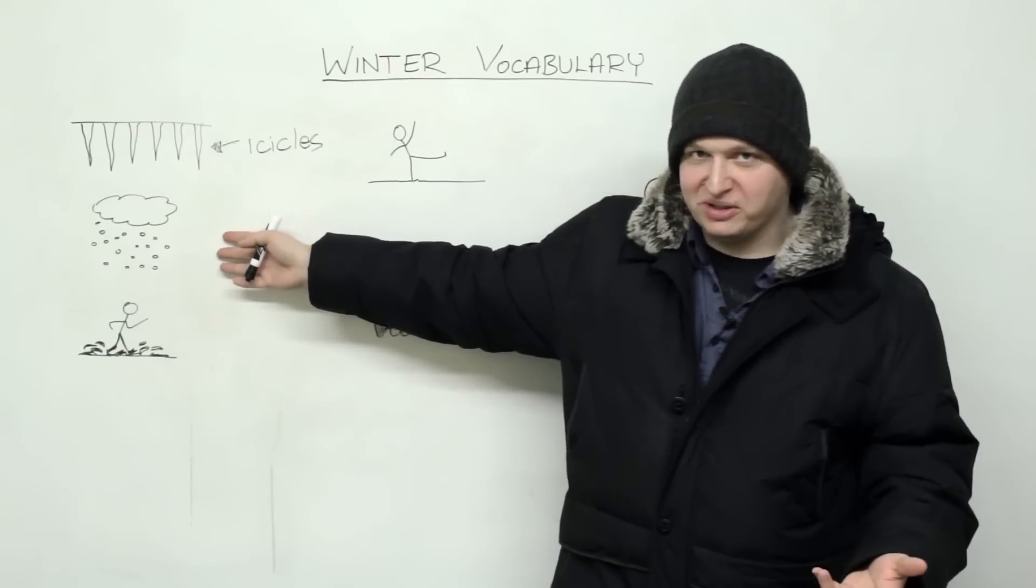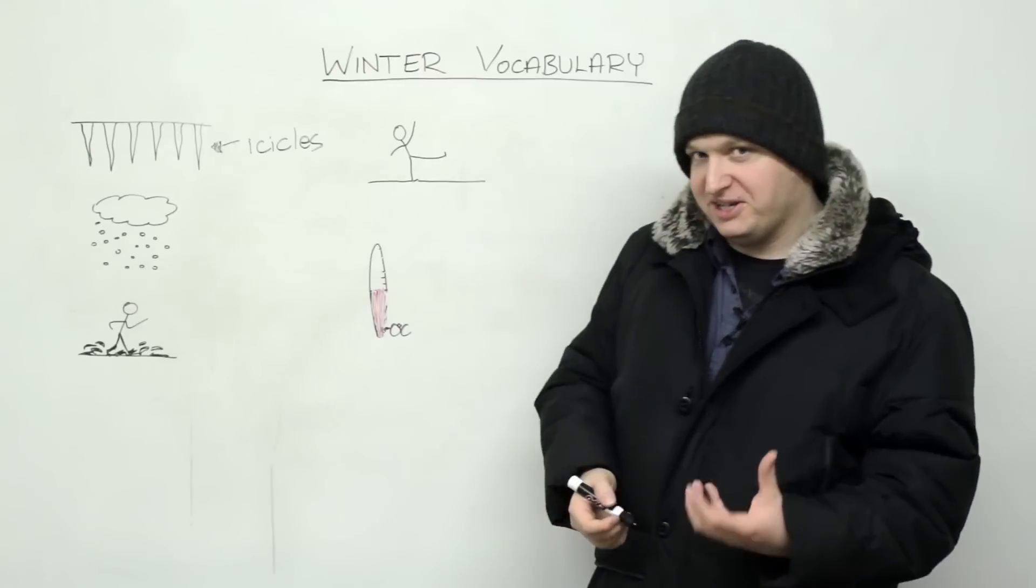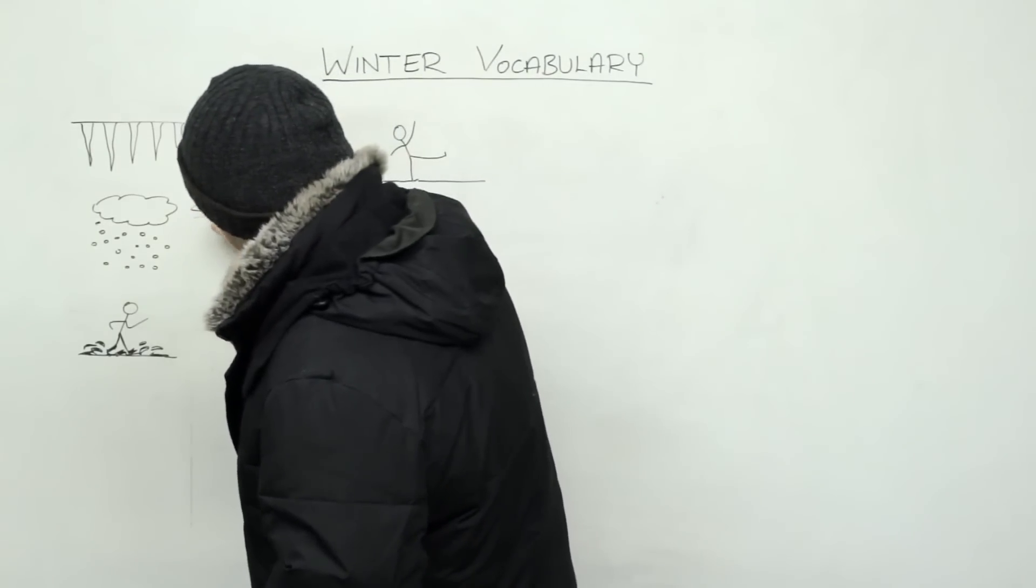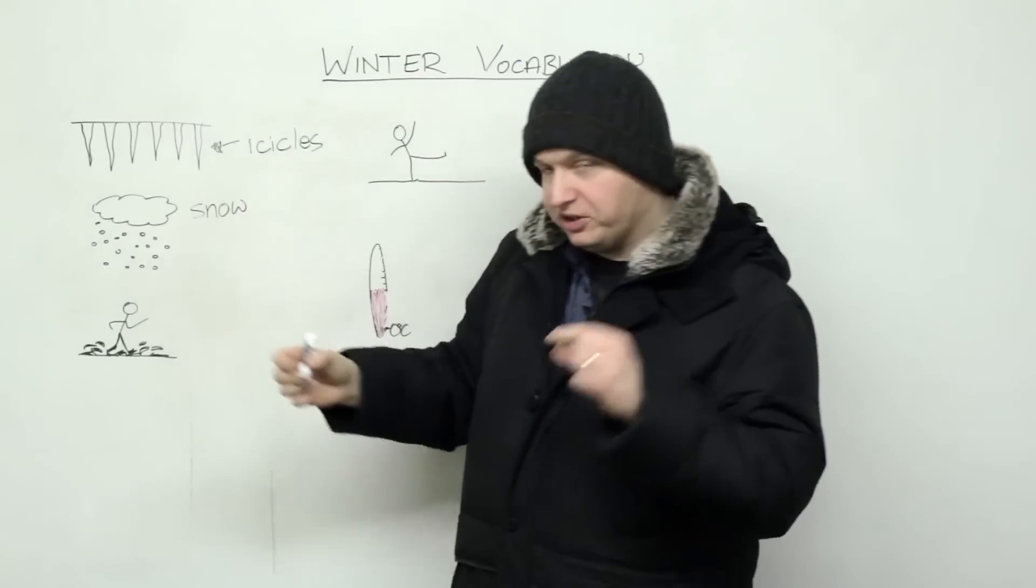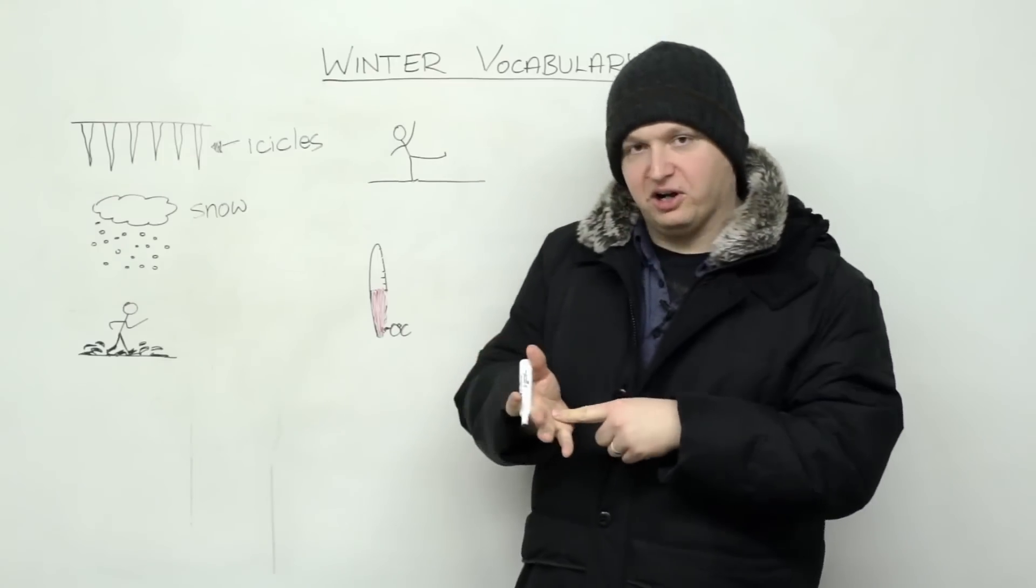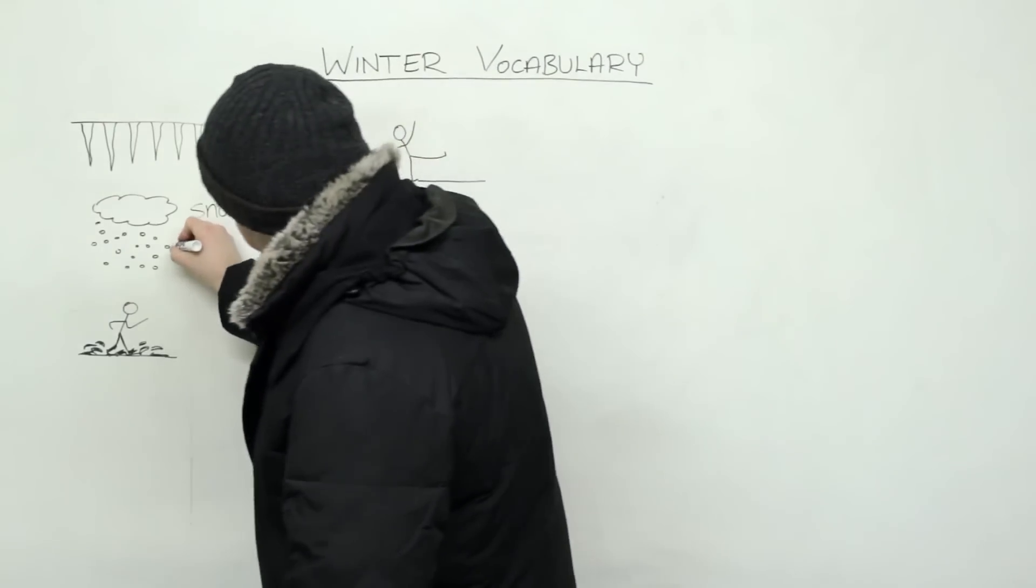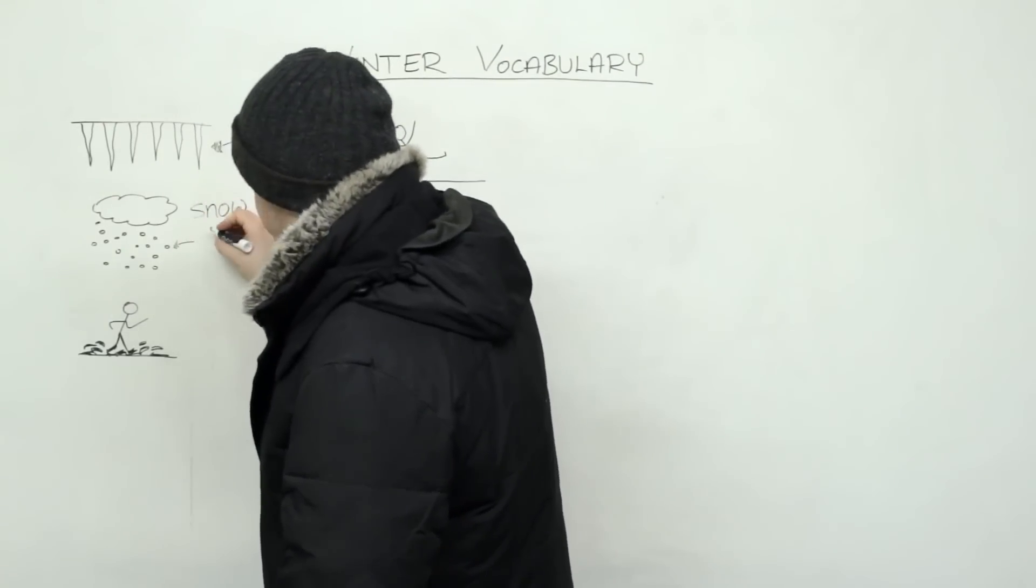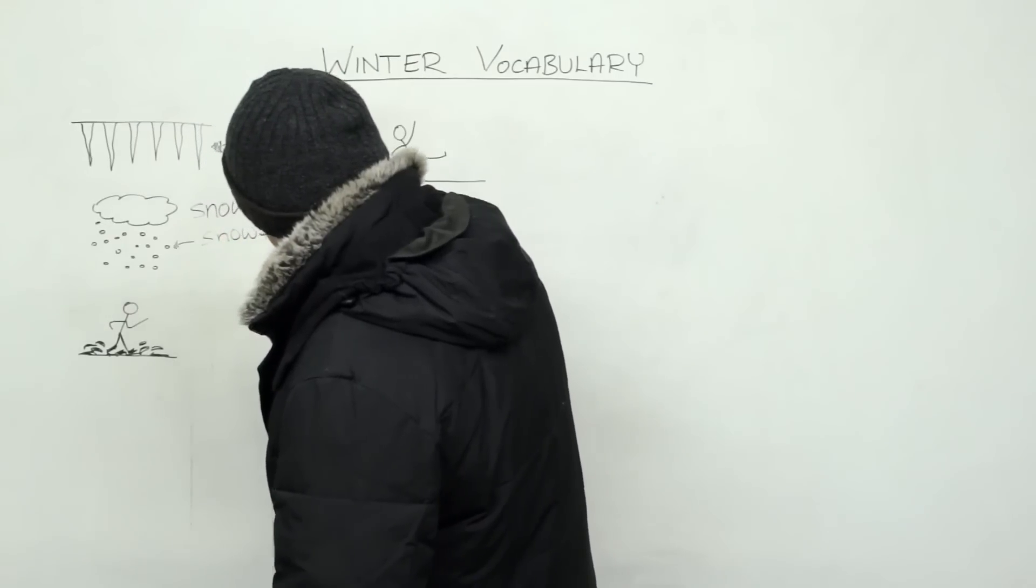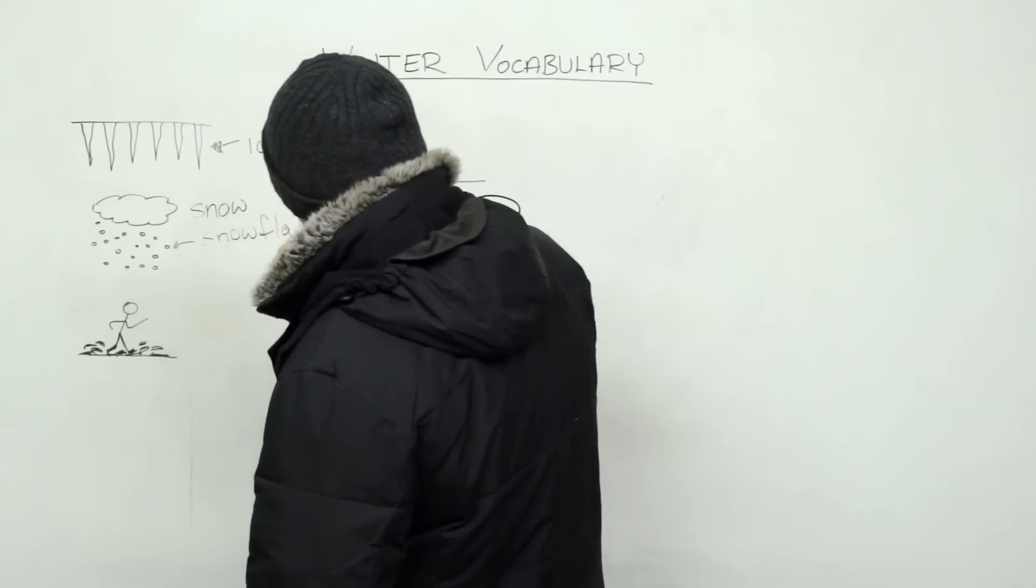Obviously most of you know what snow is, or the word is snow. Now a single piece of snow, each little piece of snow we call a snowflake. So one piece of snow, you can call it a piece of snow, is a snowflake.